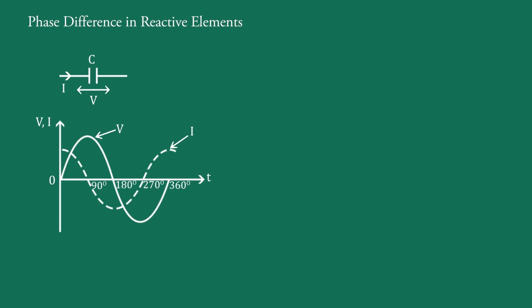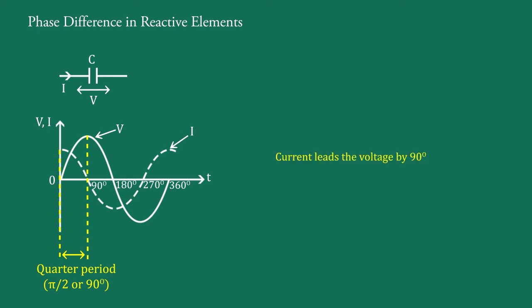That is, the current in the capacitance reaches its maximum before a quarter period of when the applied voltage takes its maximum value. Or, we say that the current is ahead of the applied voltage by 90 degrees — that is, current leads the applied voltage by 90 degrees. In other words, the applied voltage lags behind the current by 90 degrees.